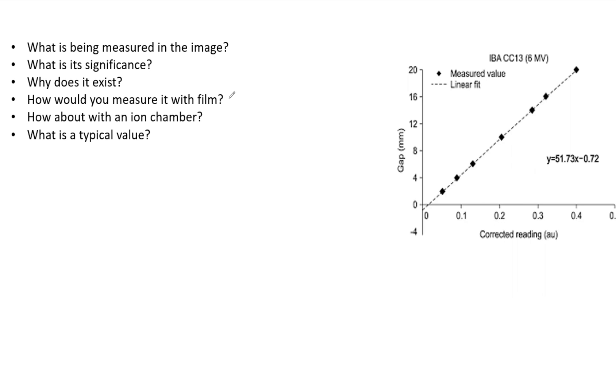How would you measure it with film? With film, you need to make exposures with various physical leaf gaps, analyze all the films, find the full width half max, plot that by gap distance, extrapolate that back to zero, and the absolute value of that is a DLG.